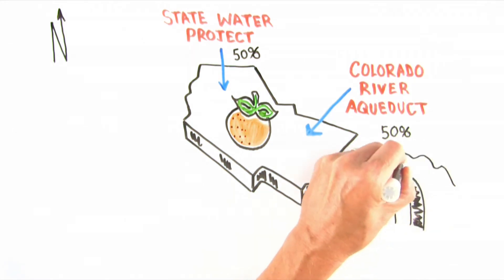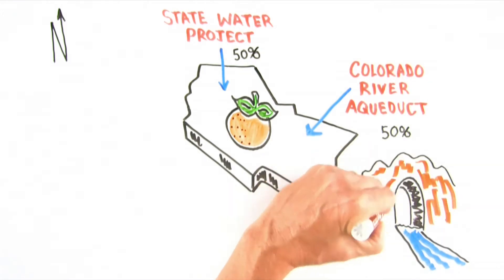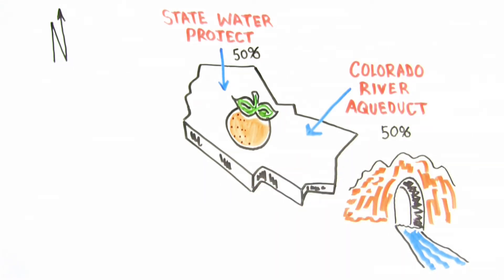The Colorado River Aqueduct was built 75 years ago by, and is operated by, the Metropolitan Water District of Southern California, which supplies the Colorado and Northern California water to the Municipal Water District of Orange County.